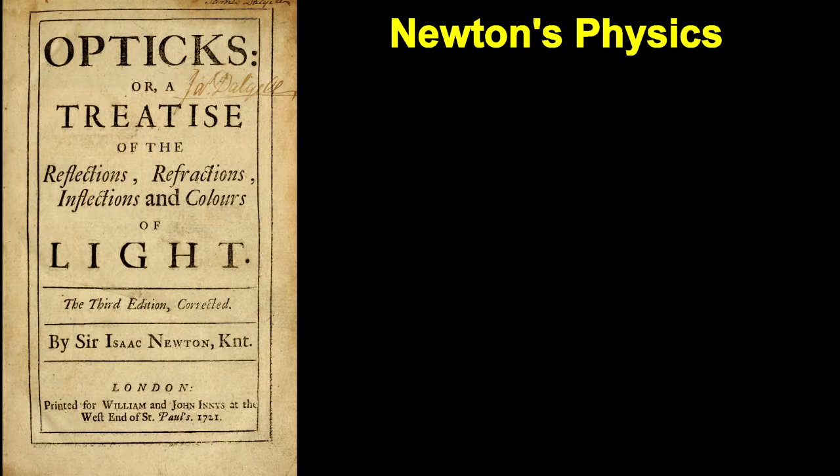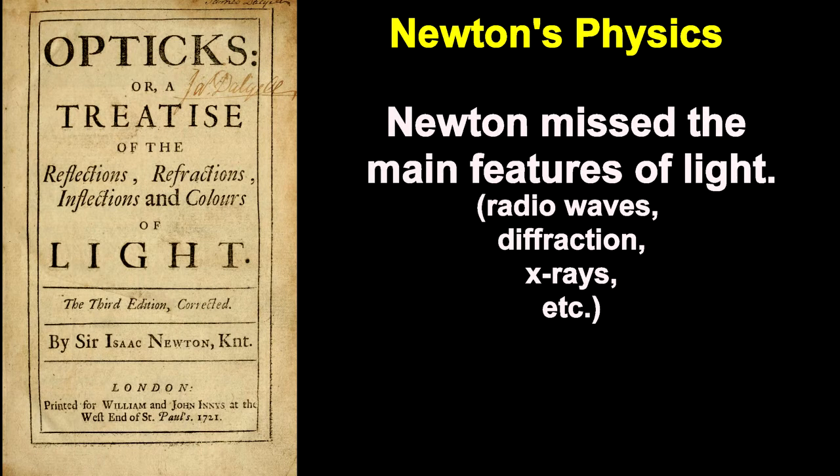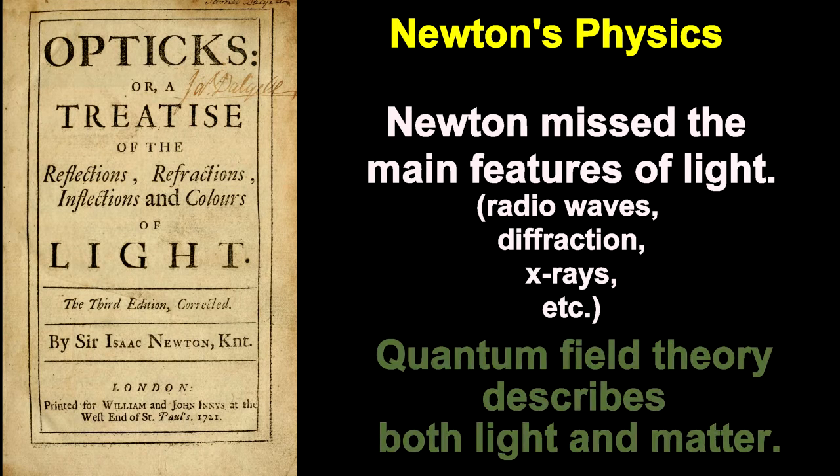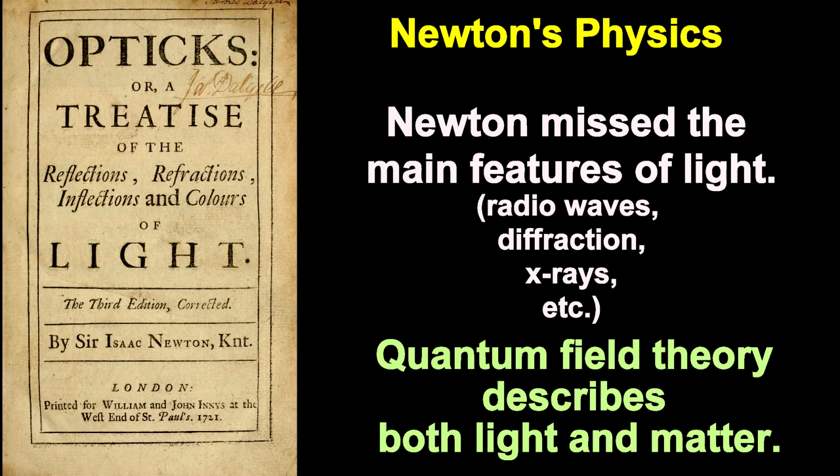Newton's theory also has problems with light, which was well described by Faraday and Maxwell in the 1800s. Their description used fields instead of objects. You could say that Newton's theory is unsatisfying when it comes to light. Quantum field theory provides a single way of describing matter and light.